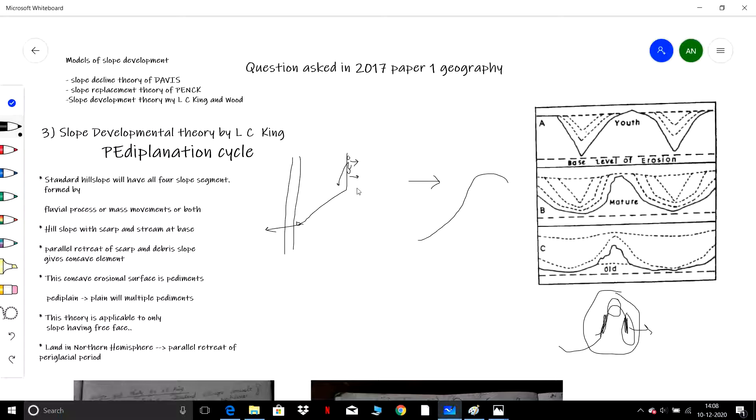Over a period of time, as this undergoes parallel retreat, it will be transformed into a concave segment as shown here. This is the convex, so there will be parallel retreat here.